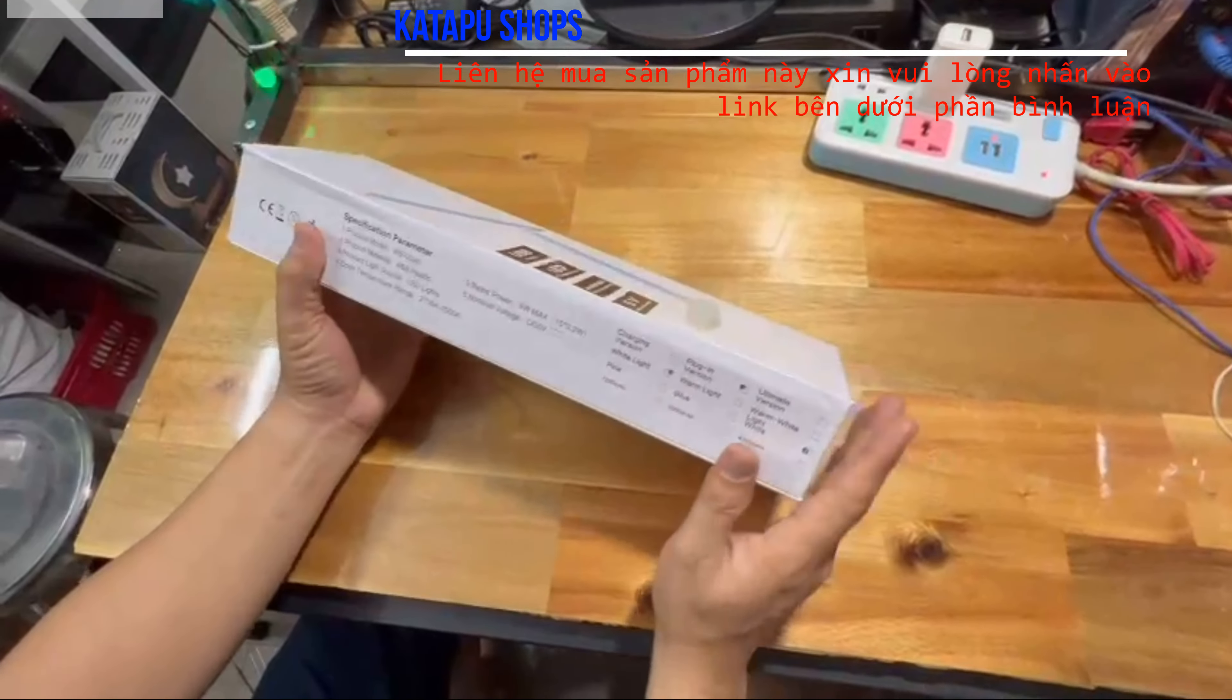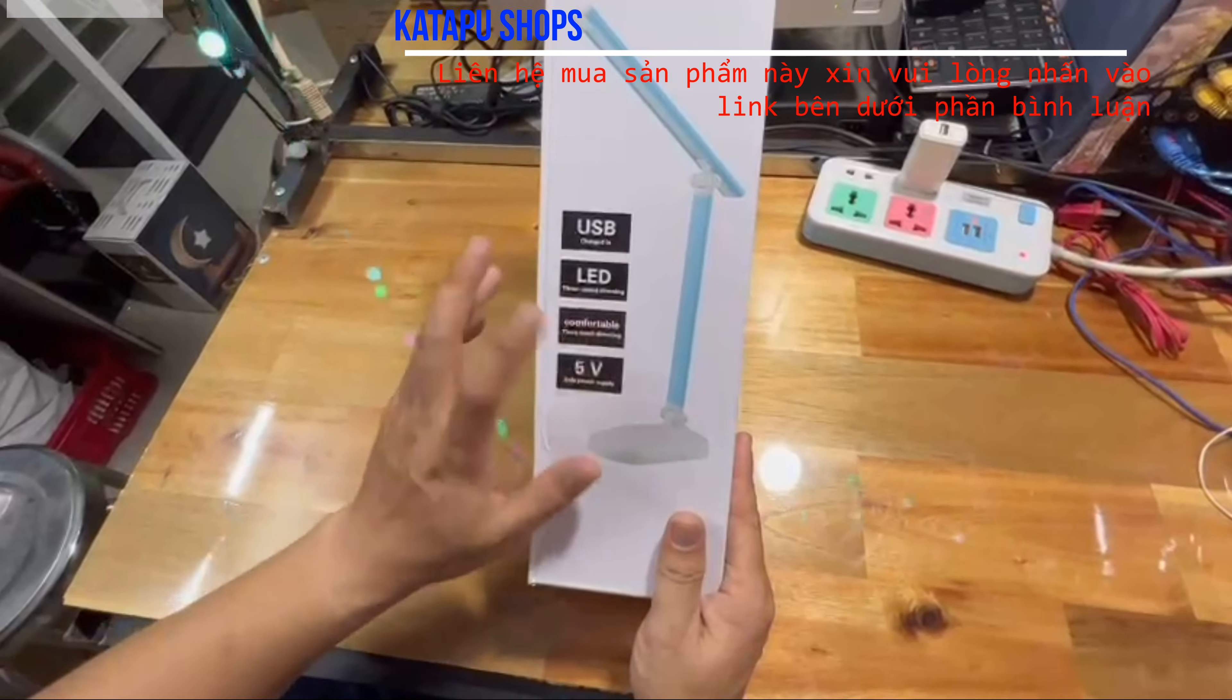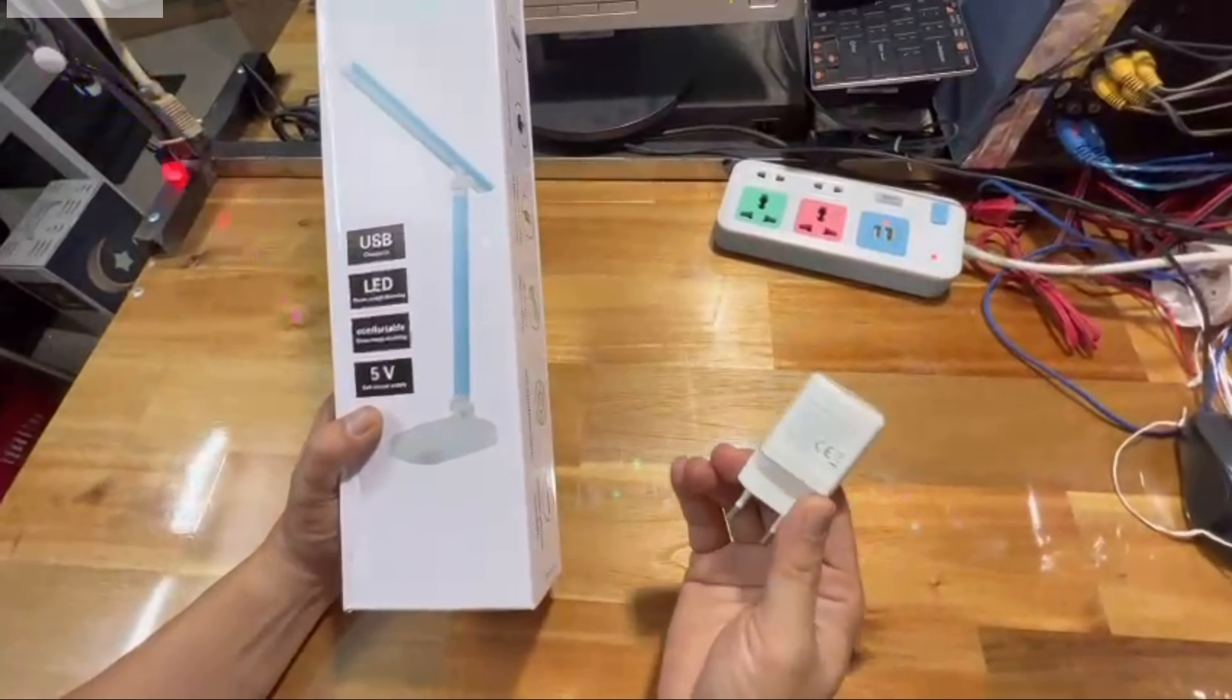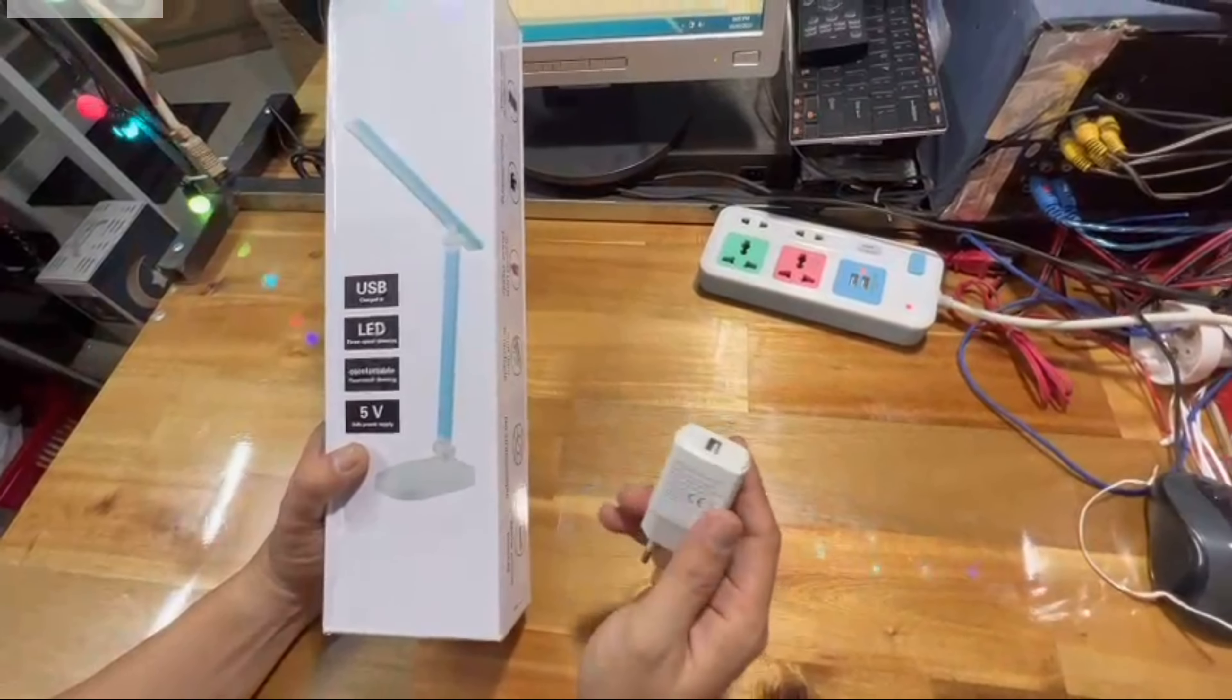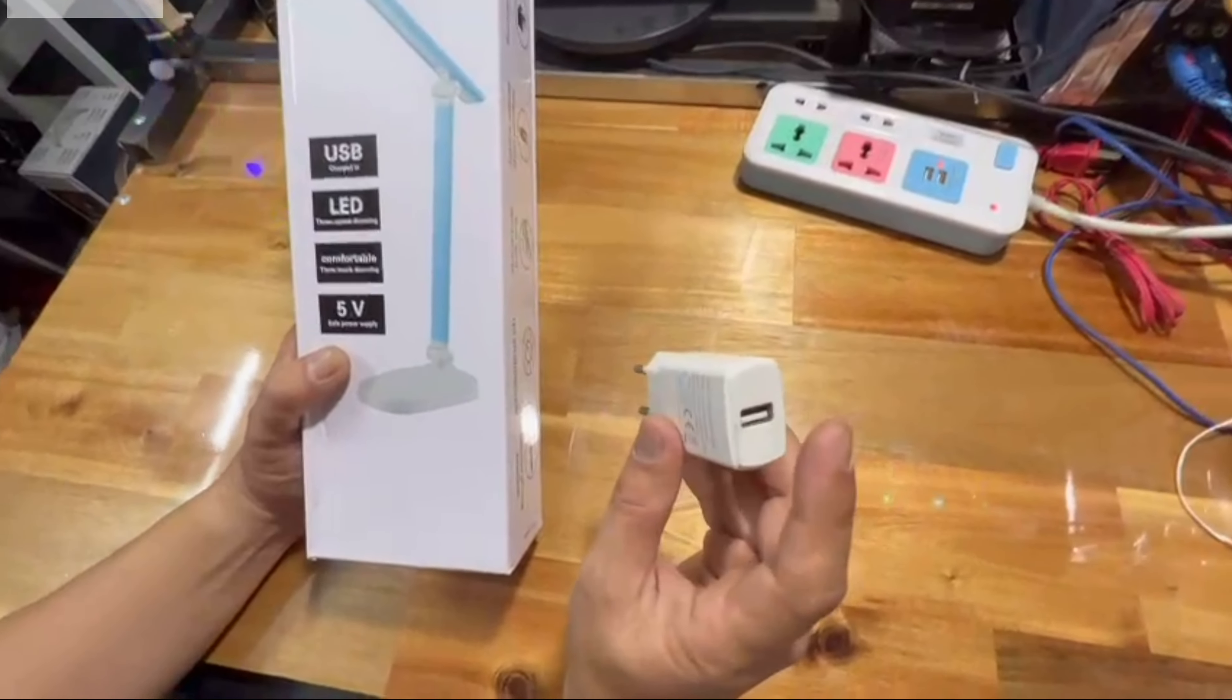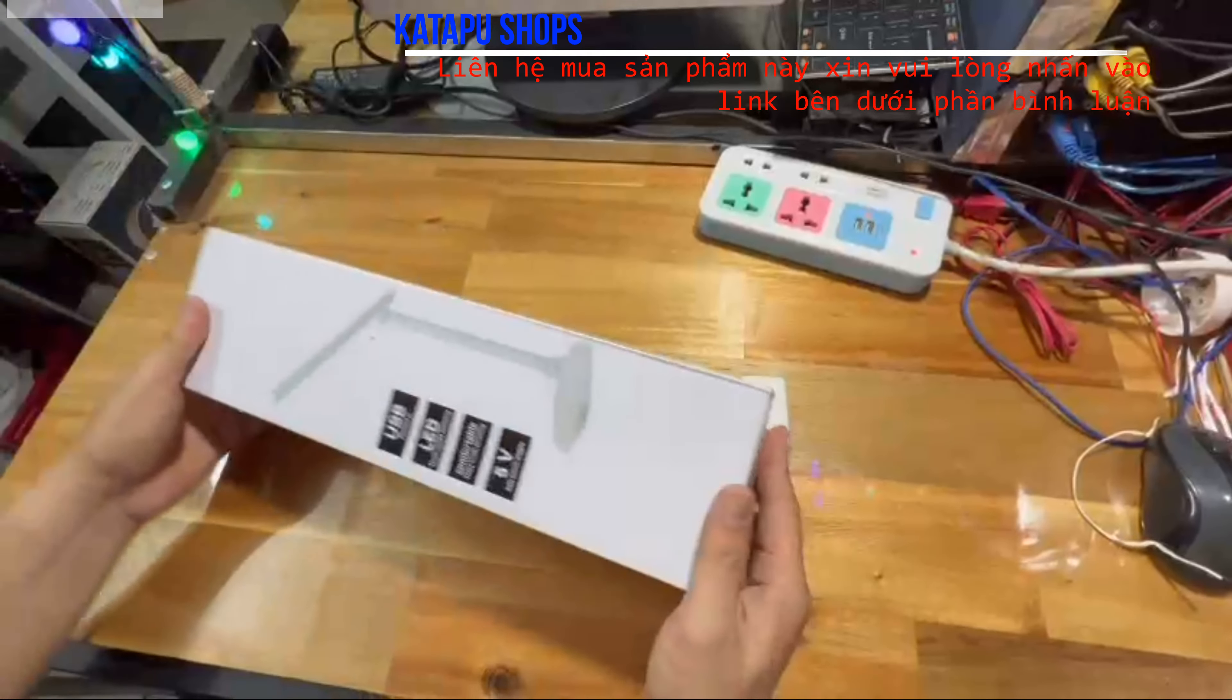Đây là đèn bàn có cổng USB để sử dụng, loại LED có thể điều chỉnh ánh sáng được. Điện áp của nó thì mình cấp nguồn qua cục sạc điện thoại, qua cổng USB 5V. Bạn dùng cục sạc iPhone hay cục sạc nào cũng được. Cổng này khoảng 1A là được, không có thiết bị cao quá. Bây giờ tôi sẽ khui hộp này ra.